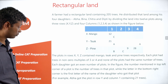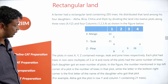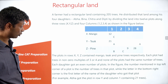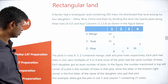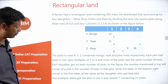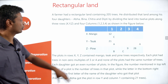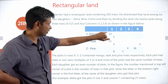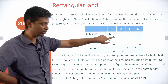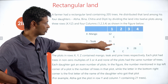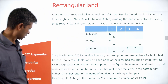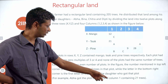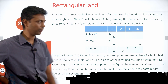Each daughter had an even number of plots. In the figure, the number mentioned in the top left corner of a plot is the number of trees in that plot, while the letter in the bottom right corner is the first letter of the daughter's name who got that plot. For example, Ava got the plot in row Y and column 1 containing 21 trees.